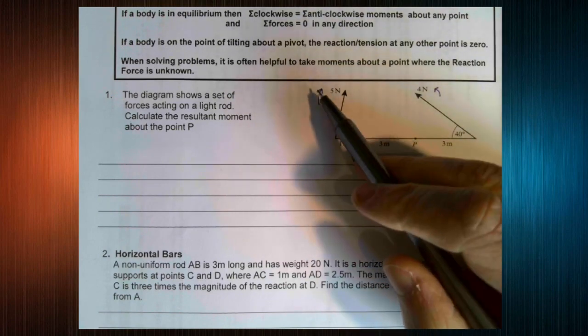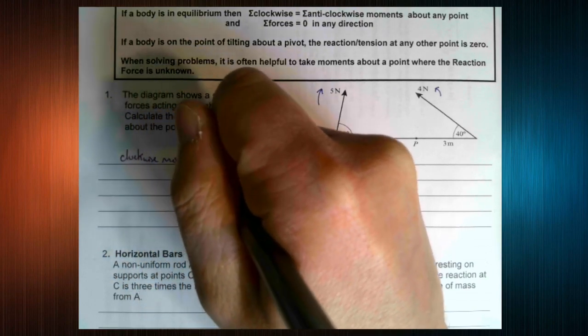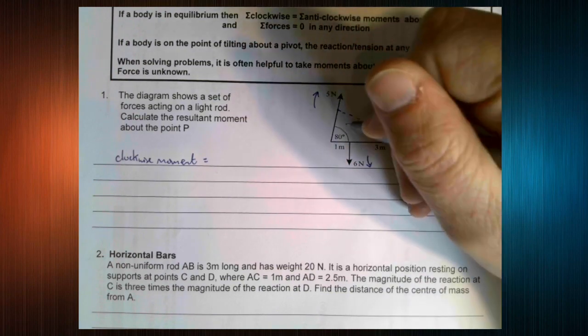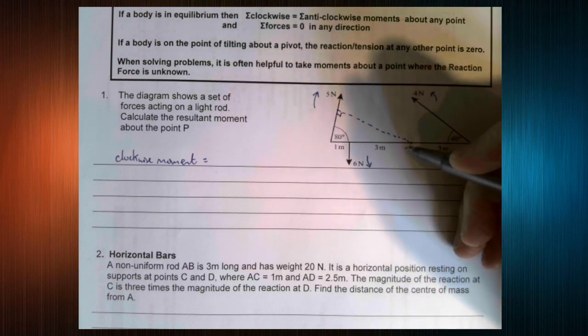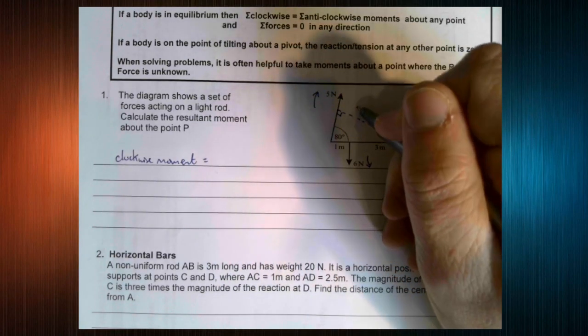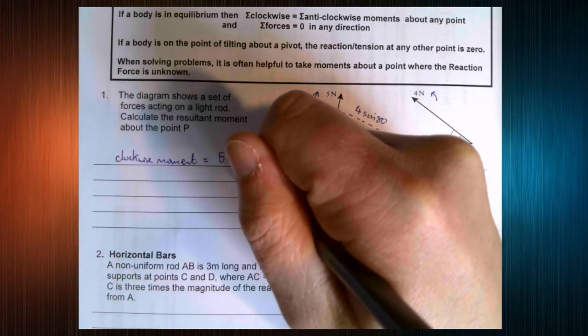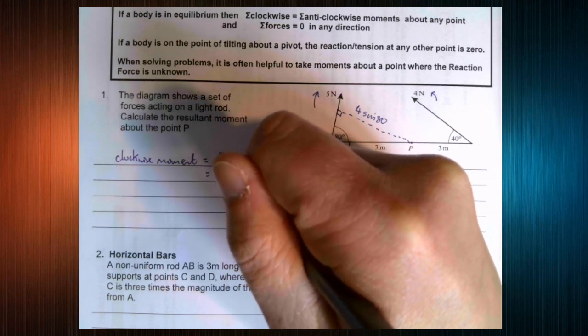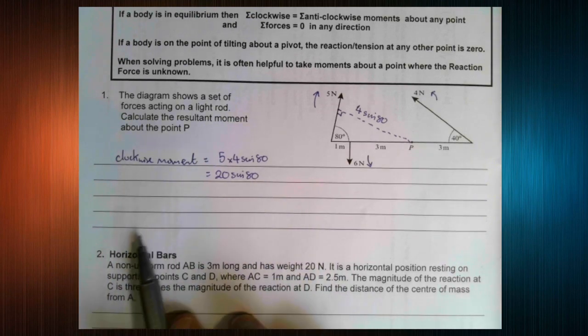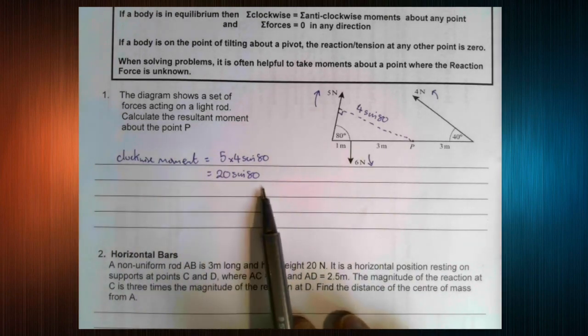So let's have a look at our clockwise moments. We've only got one of them. Now this one's at an angle, so we need the shortest distance, which is perpendicular. This whole distance is 4, so this distance here that we want is 4 sine 80. So our clockwise moment is 5 times 4 sine 80. Now in terms of my working, I personally like to leave it like that and then stick it all in my calculator right at the end, because I don't want to risk rounding too early.